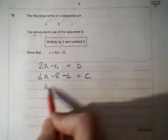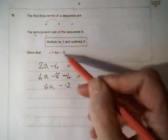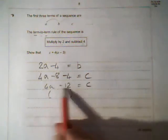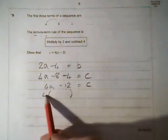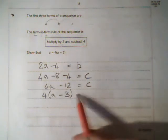Simplifying that: 4A minus 12. And looking at the question, we've got some brackets. So we need to factorise. Common factor 4 into 12. So 4A minus, 4 into 12 is 3. Equals C.